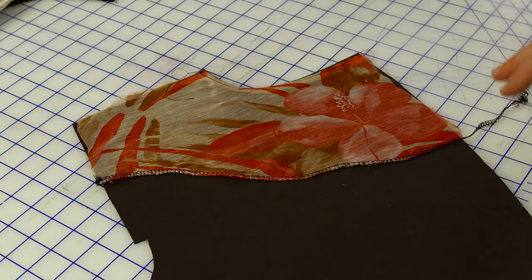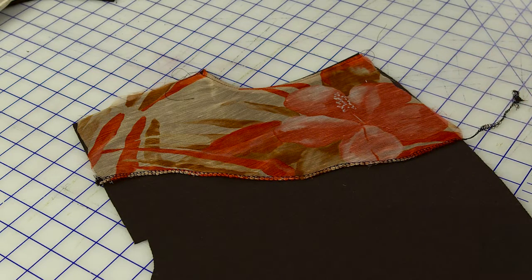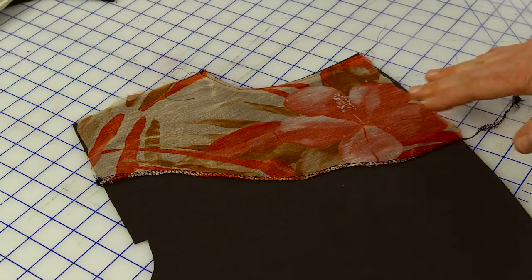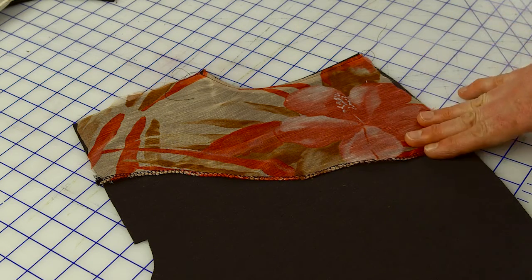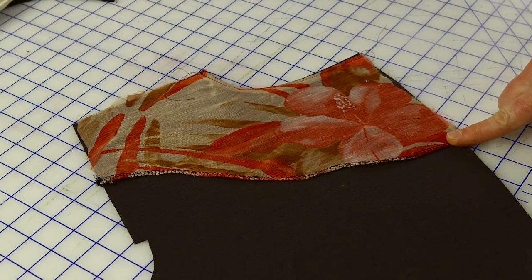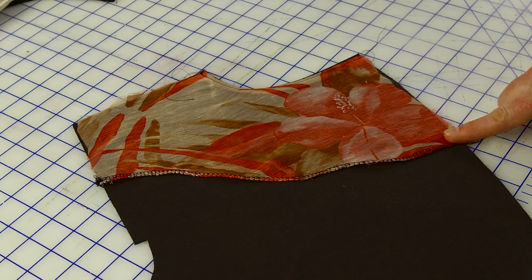Now I've got my pocket facing sewn on, and here is the inside view. You can see I've serged the edge of this pocket facing because I'm going to finish this separately and then just sew it to the pocket bag when I get it together.